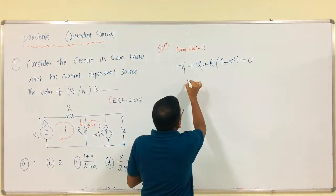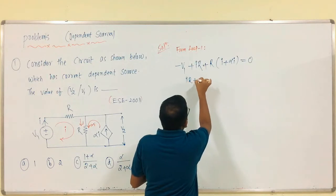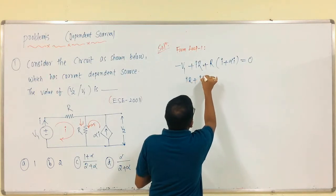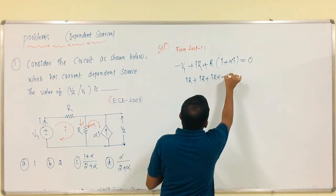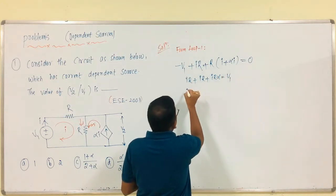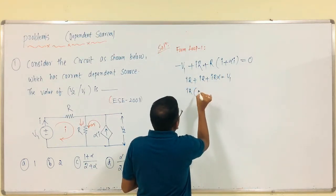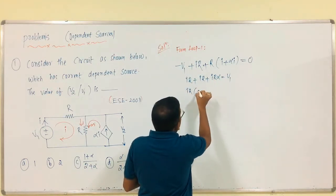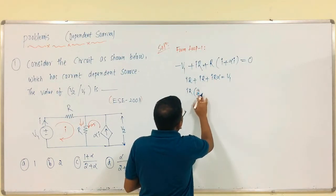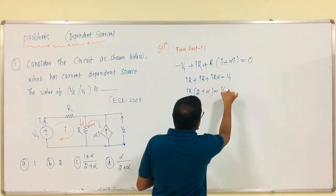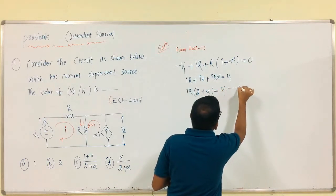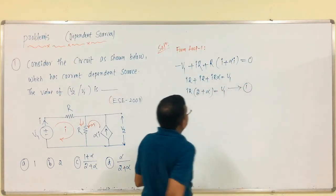From this: IR plus IR plus IR·alpha equals V1. So, (1 plus 1 plus alpha) into IR equals V1 — that is (2 plus alpha)·IR equals V1. This is equation 1.